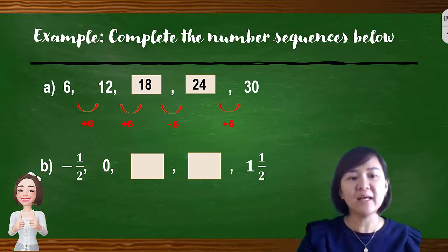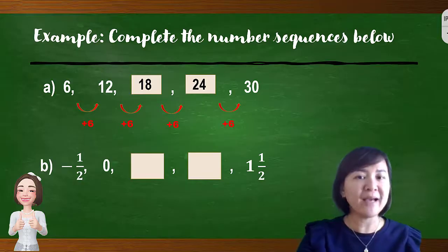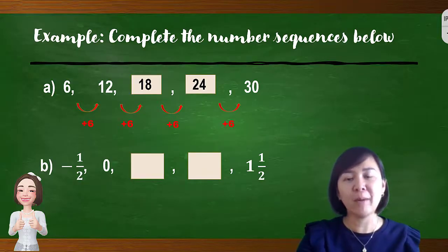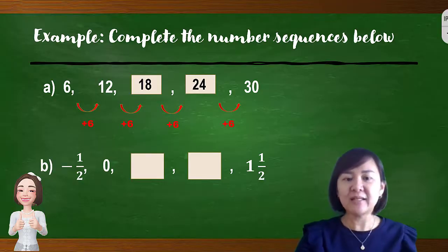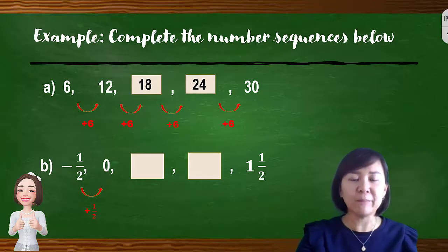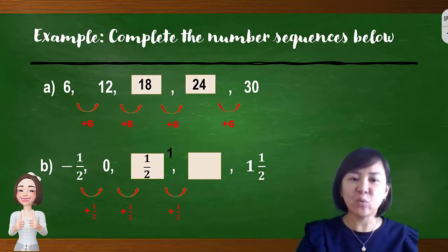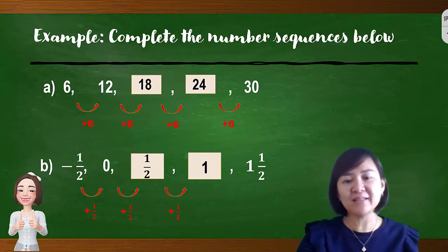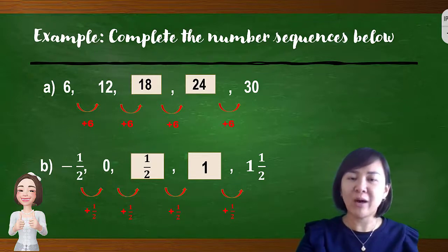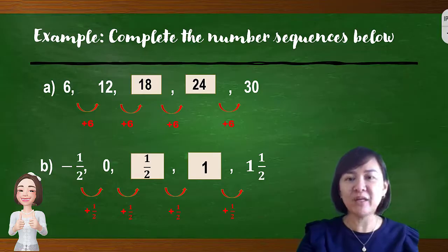The second question starts with negative 1/2, followed by 0, then two empty boxes, then 1/2. From negative 1/2 to 0, the pattern is plus 1/2. So 0 plus 1/2 gives 1/2, and 1/2 plus 1/2 gives 1. Double-checking: 1 plus 1/2 equals 1 and 1/2. Yes — we can get 1½. Therefore the pattern is correct, and the missing numbers are 1/2 and 1.